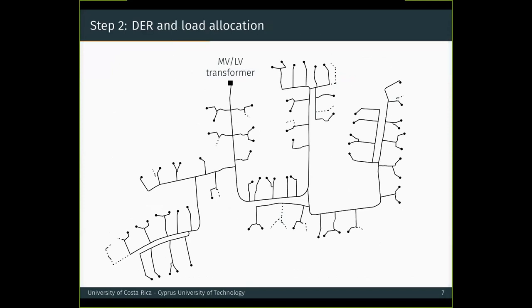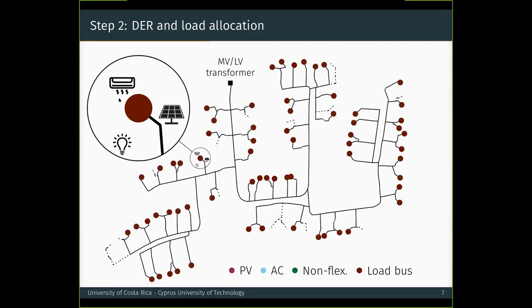After that, in the second step, we allocate DERs and loads. Our approach is simple. We simply define a penetration level and allocate, say, PV units in 20% of the load buses. Allocating here means that we know which reactive and active powers would be representative for a PV unit and we assign it to each of these buses. To name more examples, we could allocate air conditioning units similarly, and we could allocate non-flexible loads in a much larger percentage of load buses. In the end, we would add up the corresponding powers, and if we zoom in on a given load bus, we would see a realistic load consumption.